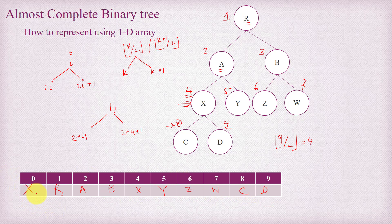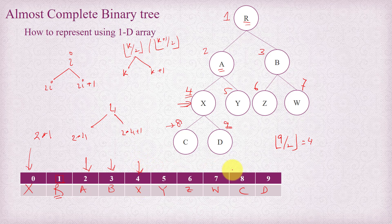We sacrifice the 0th element and don't use it, but that's not wasted because for any number of elements in the almost complete binary tree, we sacrifice only one element regardless of n. So for r at index 1, we find its left child at 2 times 1, and the right child at 2 times 1 plus 1, which is 3. For node x at index 4, its left child is at 2 times 4 which is 8, and right child at 9. For y at index 5, since 5 times 2 is 10 and there are only 9 elements, index 10 doesn't exist, so y has no left child.